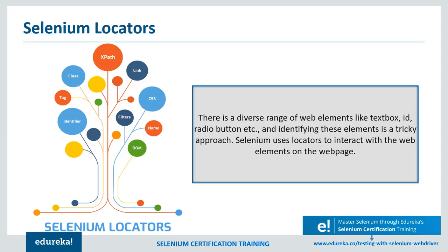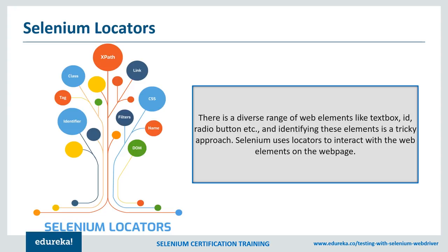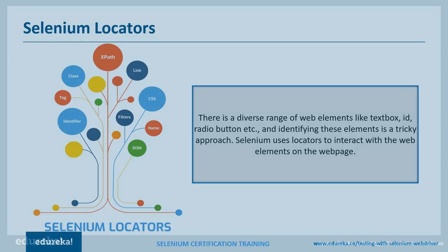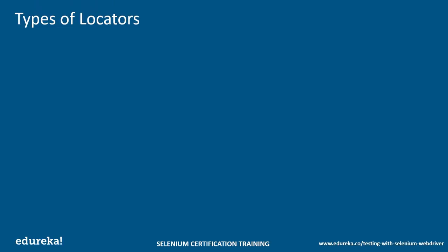If you're fortunate enough to be working with unique IDs and classes, then you're usually all set. But there will be times when choosing the right Locator will become a nightmare. It can be a real challenge to verify that you have the right Locators. There is a diverse range of web elements like text box, ID, radio button, etc., and identifying these elements has always been a very tricky subject, requiring an accurate and effective approach. The more effective the Locator is, the more stable the automation script will be. Every Selenium command requires Locators, and to identify web elements accurately we have different types: ID, name, link text, CSS selector, partial link text, and XPath.